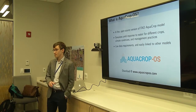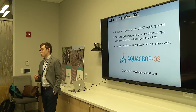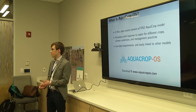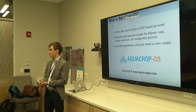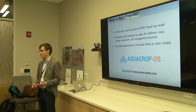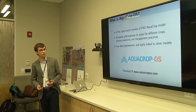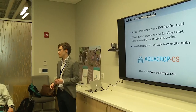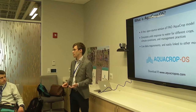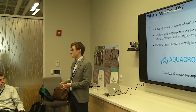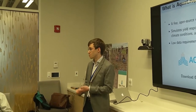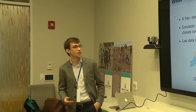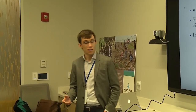Basically what the model does is simulate the yield response to water of different types of annual herbaceous crops — not perennial or tree crops, focusing on annual crops. There's quite a diverse bank of different crops that have been calibrated, including maize, wheat, sorghum, soybean, cotton, and a variety of others. It can work across a diverse range of climate conditions and management practices, and differs from a number of other crop models out there.